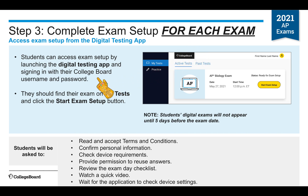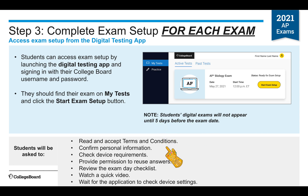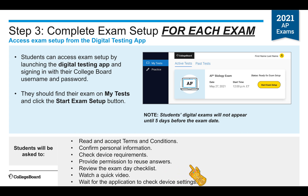You can access the exam setup by launching the digital testing app and signing in with your College Board username and password. Then find your exams under My Tests and Start Exam Setup. Your digital exams will not appear until five days before the exam date. During setup, you'll be asked to read and accept the terms and conditions, confirm personal information, check device requirements, provide permission to reuse answers, review the exam day checklist, watch a quick video, and wait for the application to check device settings — again, for each exam.